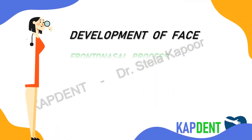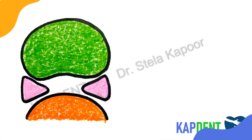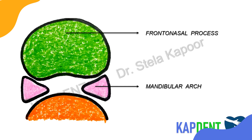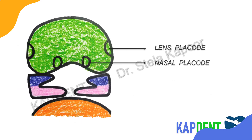Take note that the development of the face and oral cavity is mainly attributed to the frontonasal, mandibular, and maxillary processes. Visualizing the fetus from the front, we can see the frontonasal process. The first pharyngeal arch, also called the mandibular arch, contributes to the development of the face. The frontonasal process grows downwards, and the mandibular arch splits bilaterally into the maxillary and mandibular processes.